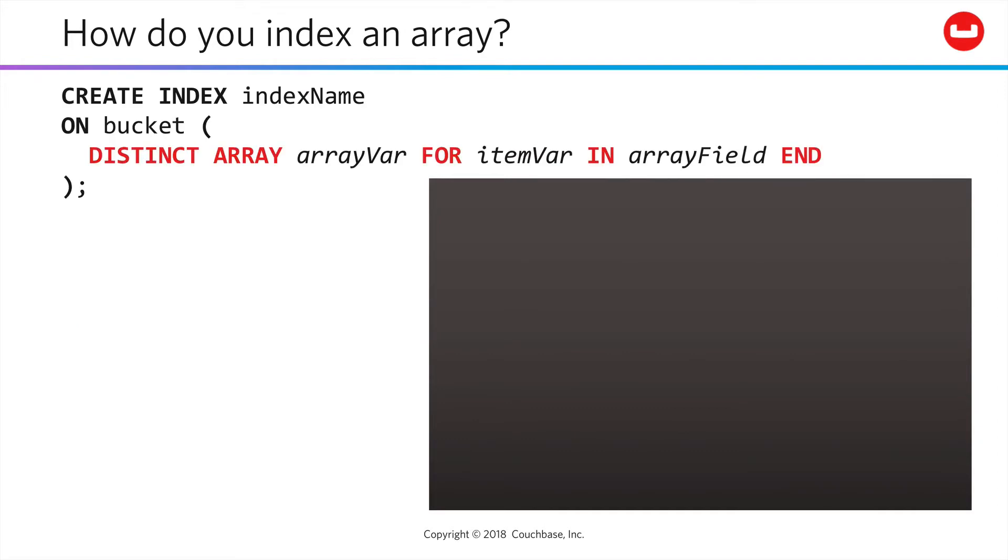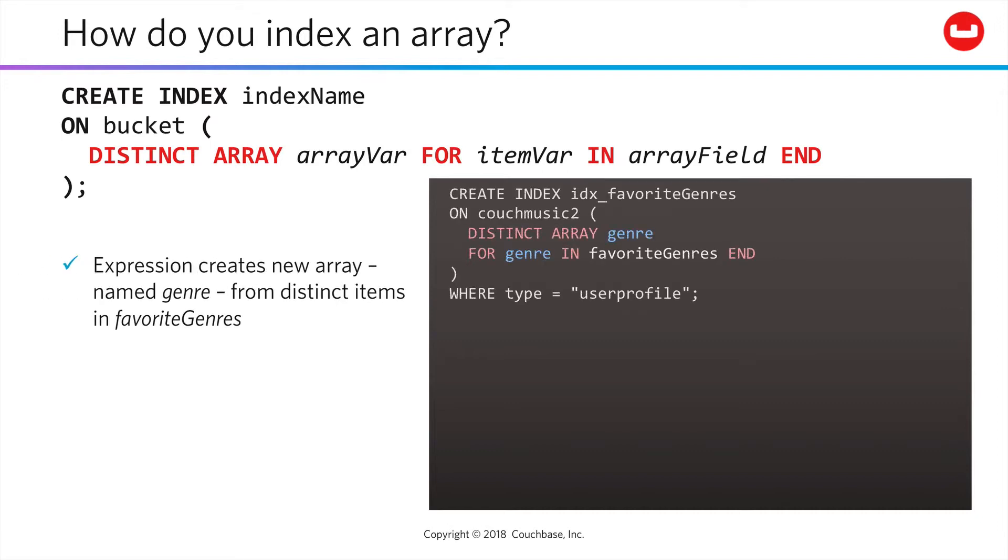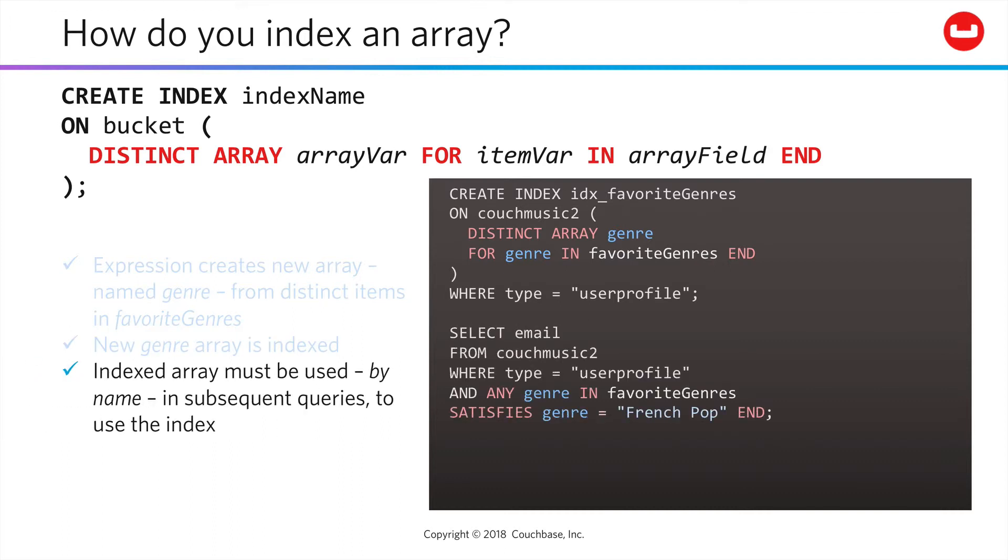Naturally, if you embed a significant amount of data within documents, you'll likely want that data indexed. You do so by writing a subquery to select DISTINCT instances of each value in the array across all selected documents as part of creating the index. An index named for the iteration variable, in this case genre, is created for these distinct values. This index can be used in subsequent queries by using the same iteration variable name.